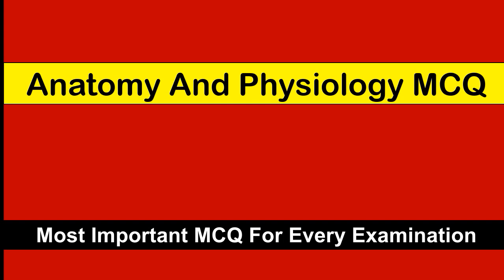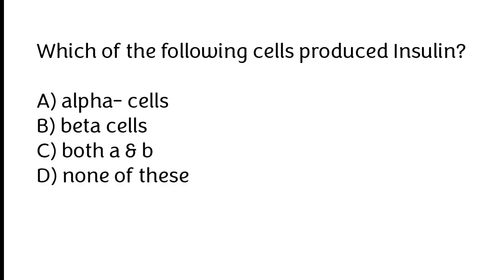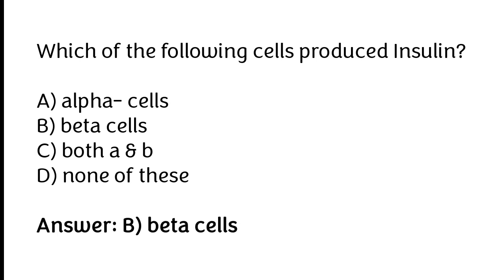Which of the following cells produce insulin? Alpha cells, beta cells, both A and B, none of these. The correct answer is option B — beta cells produce insulin.